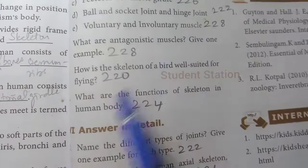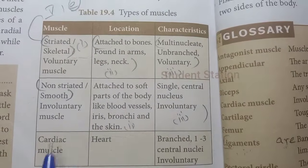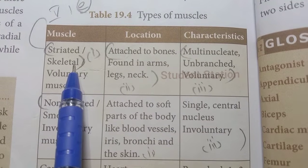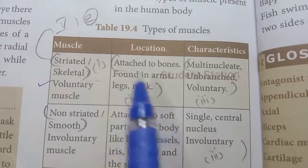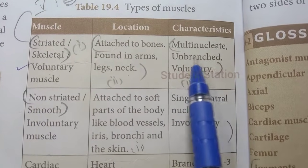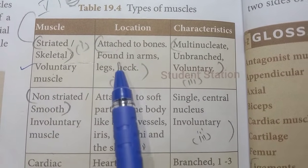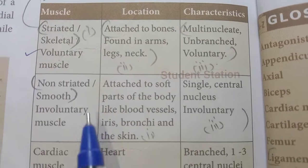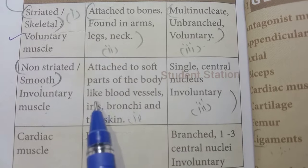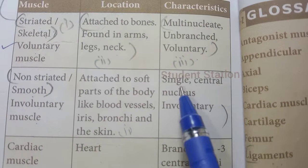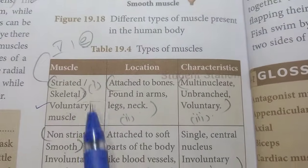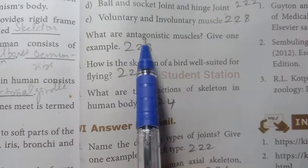Roman number 5, first one E: Voluntary and Involuntary Muscle, page 228. Voluntary muscle — first point: striated or skeletal. Second point: attached to bones, found in arms, legs, and neck. Third point: multinucleate and unbranched. Involuntary muscle — first point: unstriated or smooth. Second point: attached to soft parts of the body like blood vessels, iris, bronchi, and skin. Third point: single central nucleus.